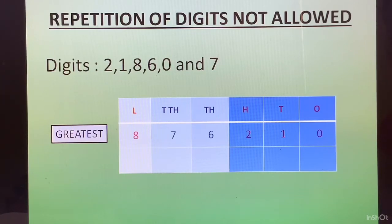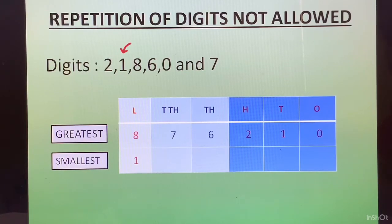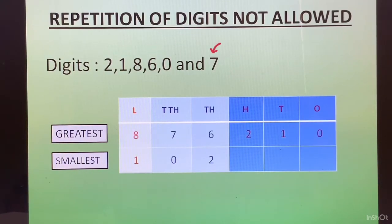For the smallest number, note that 0 cannot be the leftmost digit. Though 0 is the smallest digit, placing it first would not give us a 6-digit number. So we start with 1, the next smallest after 0. In the ten-thousands place we put 0. Then 2, followed by 6 as the next smallest digit, then 7, then 8.